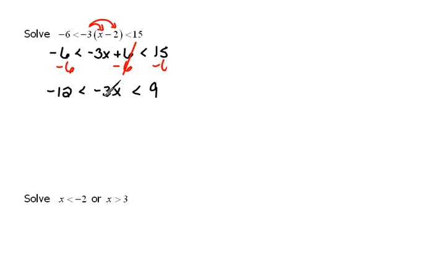Now we still want our x in the center alone, so we're going to have to divide everything by -3. Now when we divide inequalities by a negative, we also have one other step: we have to flip the inequality symbol. So -12 divided by -3 would be 4. We have to flip the symbol because we divided by a negative. We have to flip the other symbol also because we divided by a negative. 9 divided by -3 would be -3.